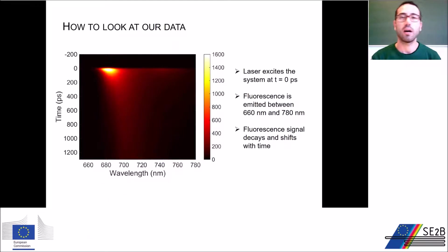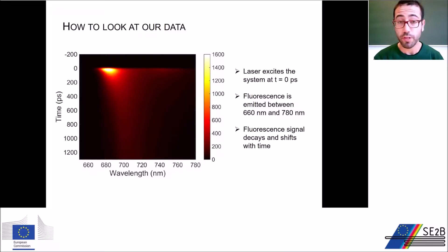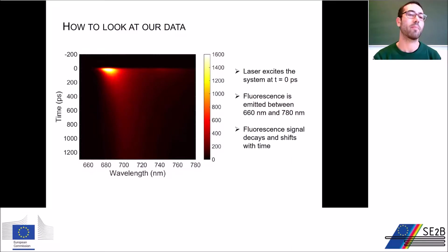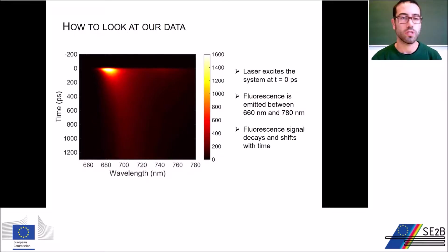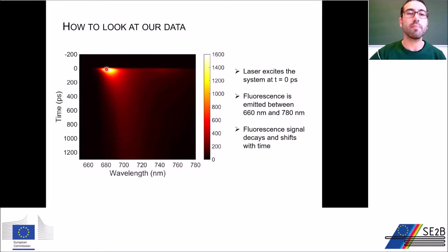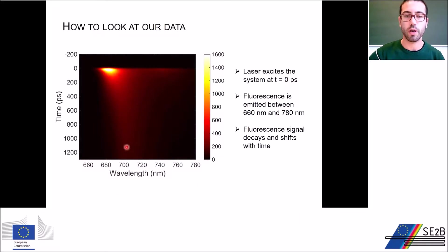Here is a sample measurement. Time-resolved fluorescence data appear like a matrix as a function of both wavelength and time. This means that a different fluorescent spectrum is emitted at different times. At time zero, the laser is exciting our system and the signal appears, and then it decays in time.